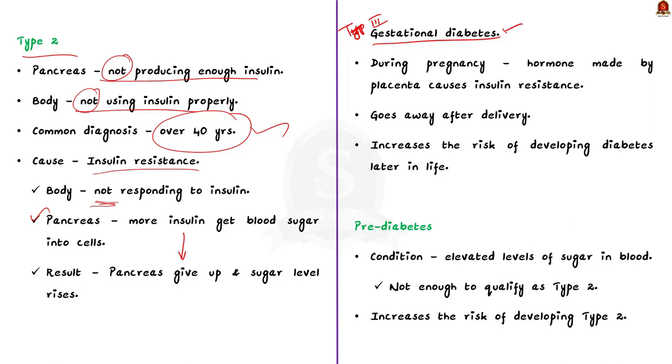When a person is pregnant, the placenta makes more hormones. In some women, these hormones can cause insulin resistance, which leads to high blood sugar. This is all about the third type.